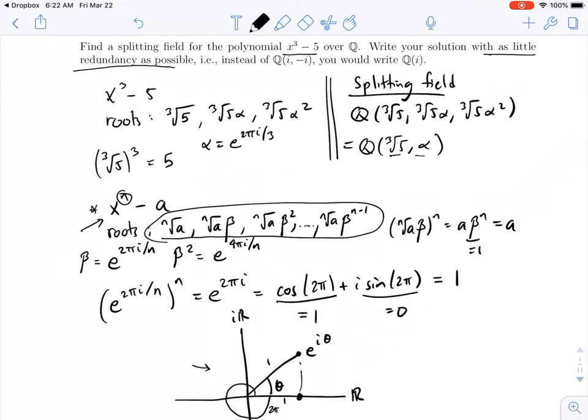So, if I have cube root of 5, and I have alpha, then I certainly get cube root of 5, I get their product, and I get alpha squared, and so I'll get the product with alpha squared. So, certainly, if I have this bottom field extension, I'll get the top field extension.